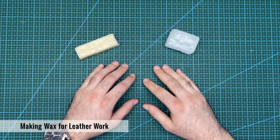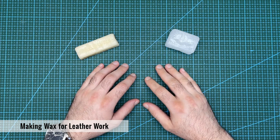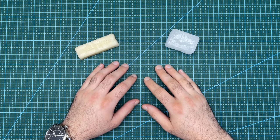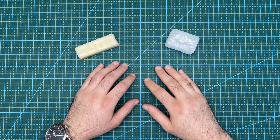There are a few types of wax that are normally used in leather craft. Hard wax is used for edge finishing and a soft wax mix is used for conditioning leather. I will be focusing on the hard type of wax for this video.